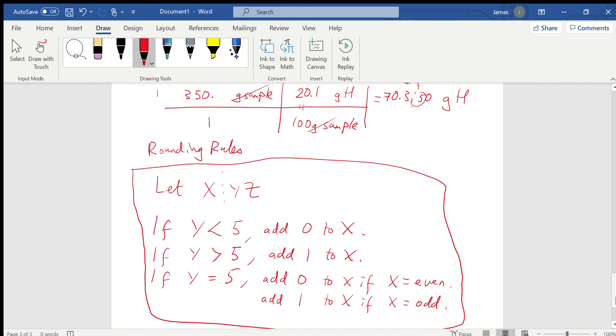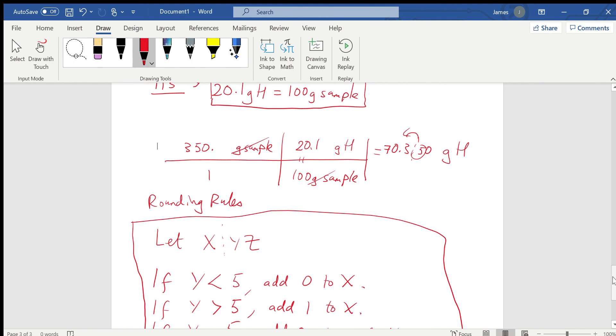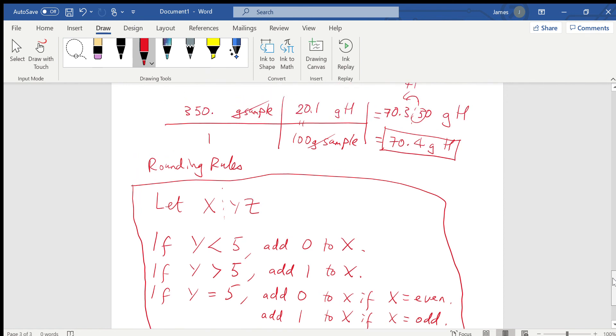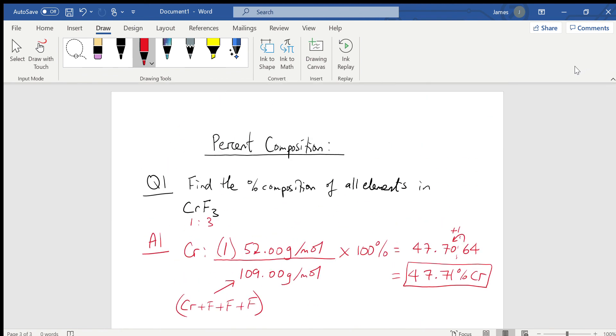Now we can see if we apply these rounding rules to this problem, that we have a five. But X in this case is three, so we would add one to make three an even number. So the final answer would be 70.4 grams of hydrogen. We adopted the bottom of the two possible options because X was odd as presented. That will conclude this video on percent composition.